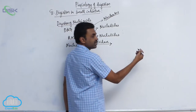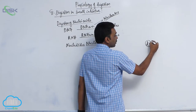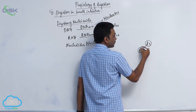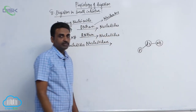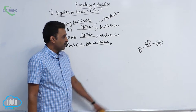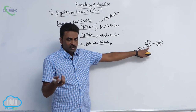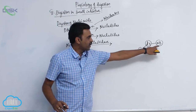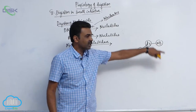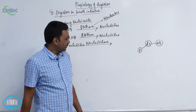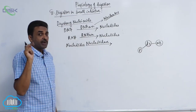A nucleotide consists of a deoxyribose or ribose sugar, one nitrogen base, and one phosphate or phosphoric acid. Together these three components form one nucleotide. Nucleotidase comes from intestinal juice and acts on nucleotides.